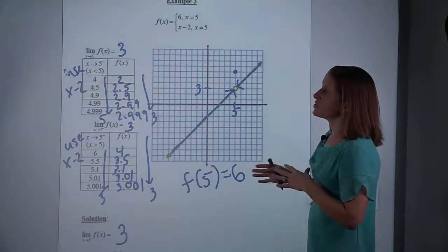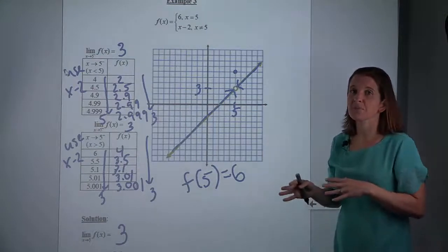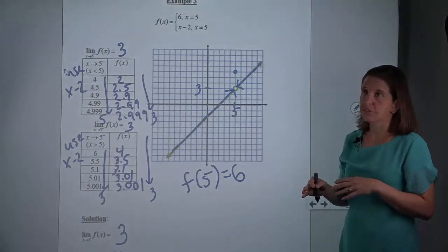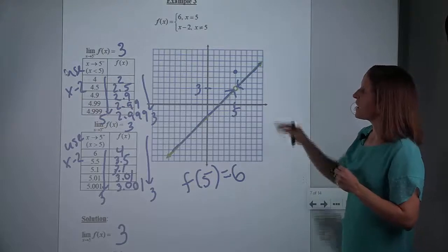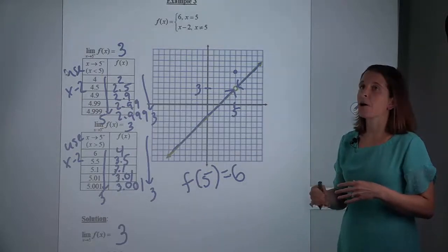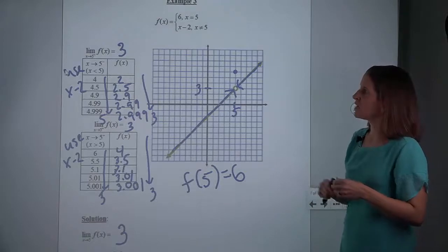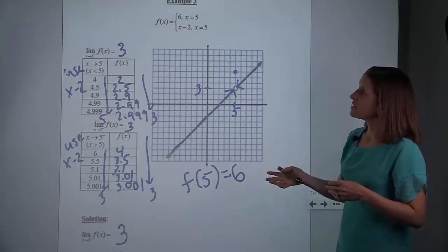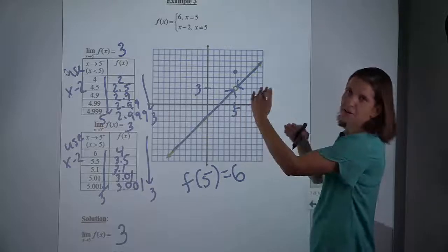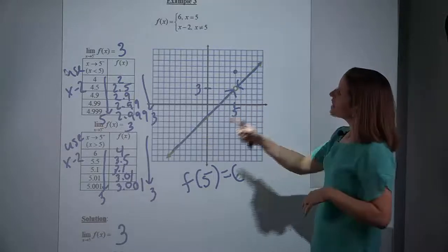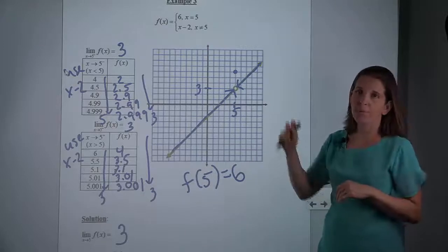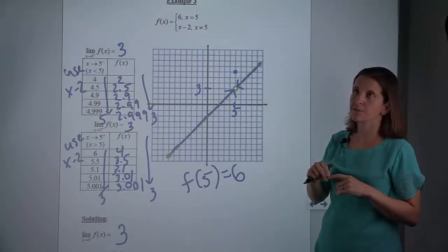This is going to lead to the idea of continuity, which we will get to in a couple sections, where we need to compare the function value to the limit value, and whether or not those equal will help us determine continuity. So now we've seen a limit problem where there are two functions that don't meet up, and another where it's pretty much just one function but then there's a hole and maybe that point is located somewhere else.